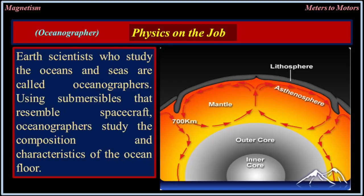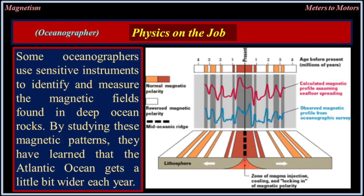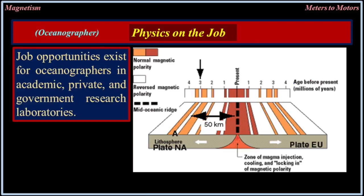Earth scientists who study the oceans and seas are called oceanographers. Using submersibles that resemble spacecraft, oceanographers study the composition and characteristics of the ocean floor. Some oceanographers use sensitive instruments to identify and measure the magnetic fields found in deep ocean rocks. By studying these magnetic patterns, they have learned that the Atlantic Ocean gets a little bit wider each year. Job opportunities exist for oceanographers in academic, private, and government research laboratories.